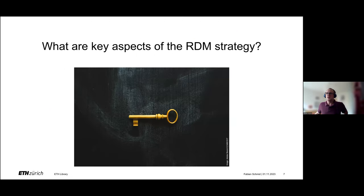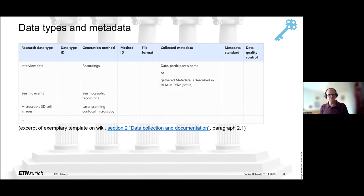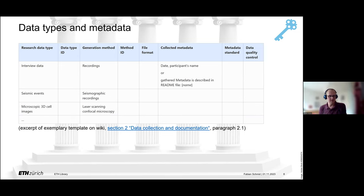So what are the key components of your strategy? One of the major components — I actually think it's the core component — is a list or collection of the data types and also associated metadata to these data types that will arise in your group. From this, you can make a lot of other agreements about your data handling.